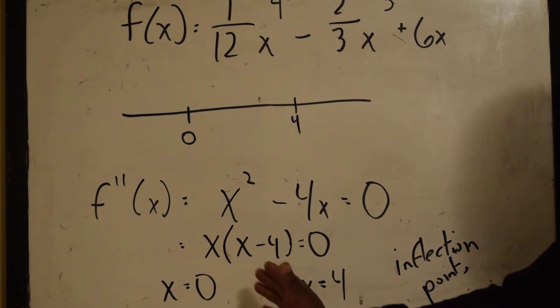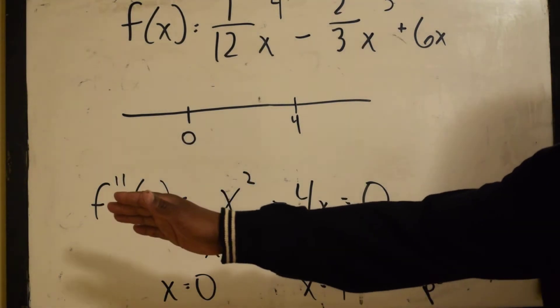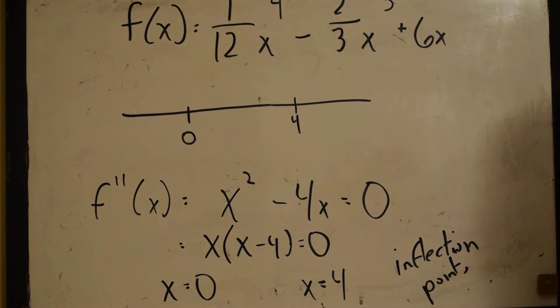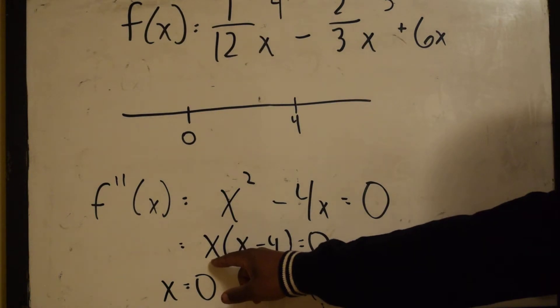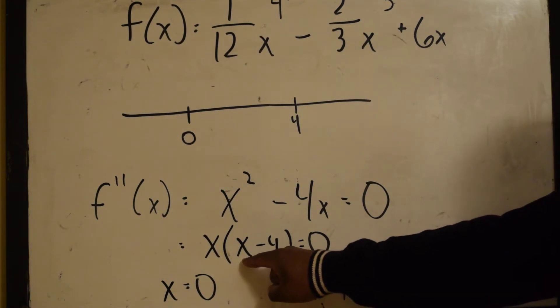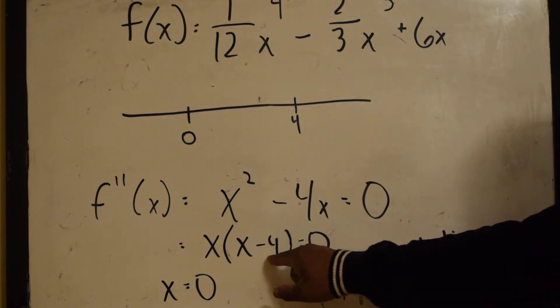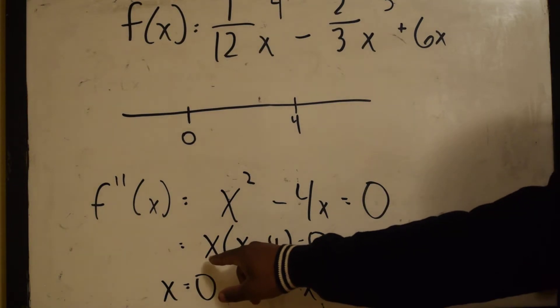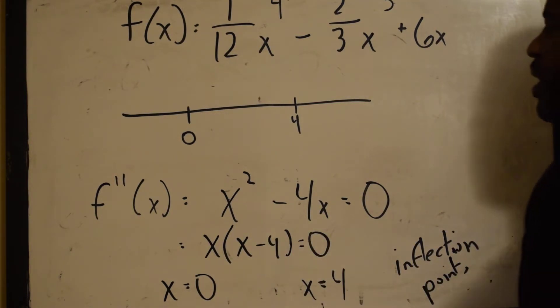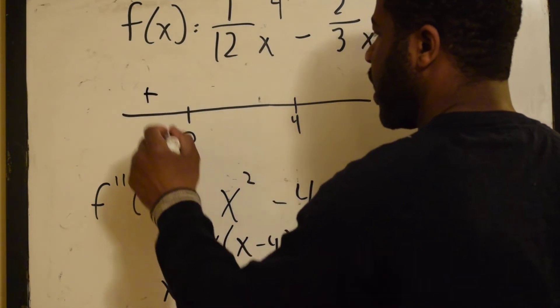So now, let's plug in any number smaller than 0. Let's plug in negative 5. Okay, negative 5, this will give us negative 5 minus 4, which is negative 9. Negative and negative is positive.